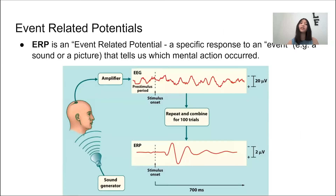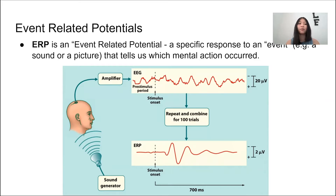This leads us to ERP, short for event related potentials, and it's a method we primarily use in the lab. ERPs are derived from EEGs — they're essentially averaged EEG responses that are time locked to a specific task or event. What that means is we'll present an event, whether that's a sound, a picture, or a specific task we want the participant to do while recording the EEG.